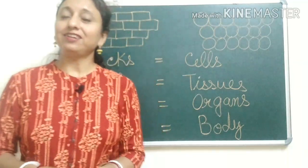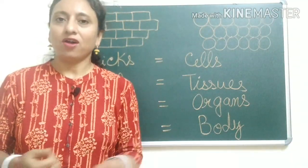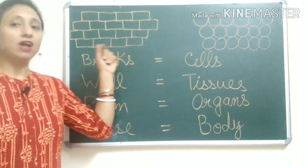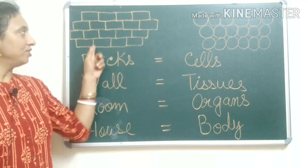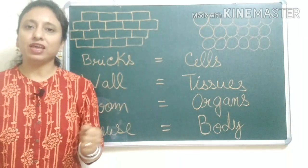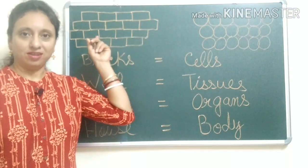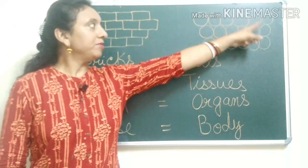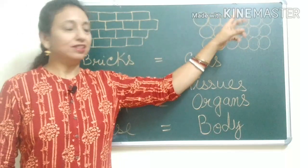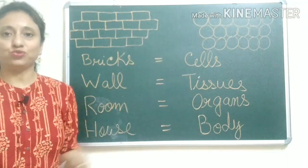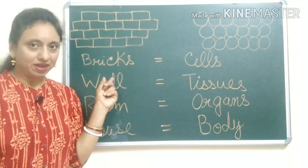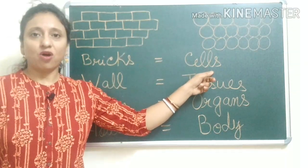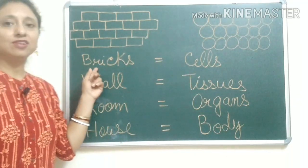Now let's understand cells, tissues, and organs with another example. We all know that our houses are made up of bricks. One after another, several bricks join together and make a wall. Just like that, similar types of cells join together and make tissues. As the bricks make walls, the cells make tissues. So we can say that the cells of our body are just like the bricks of our house.